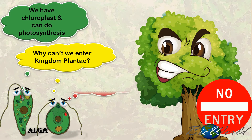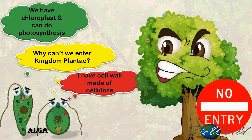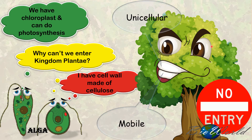The reasons why alga cannot be classified under kingdom plantae: although they have chloroplasts, they do photosynthesis, and in the case of chlamydomonas it has a cell wall made of cellulose — the reasons are because firstly, members of kingdom plantae have to be multicellular, whereas alga are unicellular. Besides that, members of kingdom plantae are not mobile; they are static. Whereas algae, due to the presence of flagella, are mobile.